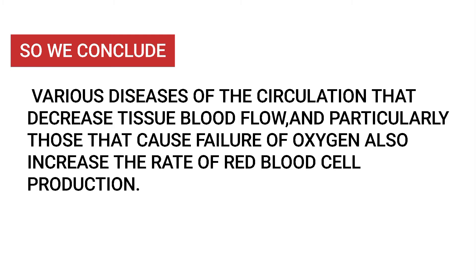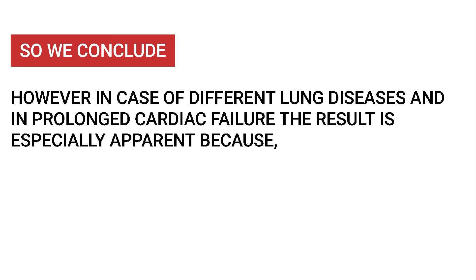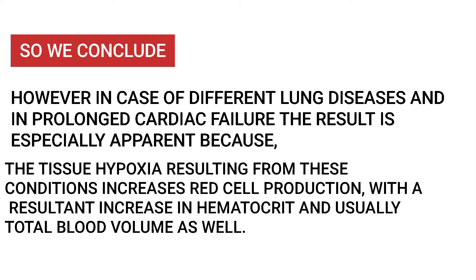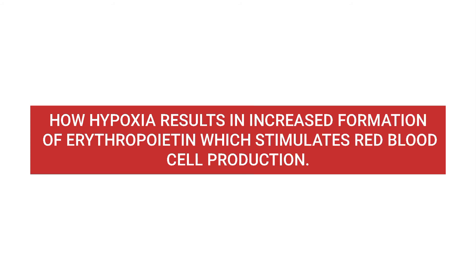Various diseases of the circulation that decrease tissue blood flow, and particularly those that cause failure of oxygen supply, can increase the rate of red blood cell production. In cases of different lung diseases and prolonged cardiac failure, this is especially apparent, because the tissue hypoxia resulting from these conditions increases red cell production with a resultant increase in hematocrit and usually total blood volume as well.